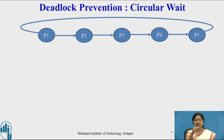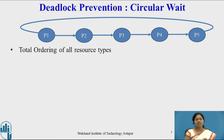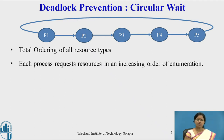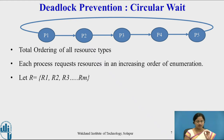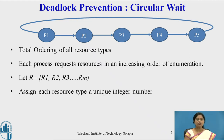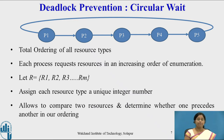Next we study circular wait. In circular wait, processes are waiting for each other and the last process is again waiting for the first process. To prevent circular wait, we require total ordering of all resource types. Resources must be ordered, and each process must request resources in an increasing order of enumeration. Suppose we have resources R1 to Rm — assign each resource type a unique integer number, allowing us to compare two resources and determine ordering. We define a one-to-one function f from R to N, where N is the natural numbers and R is the set of resources.